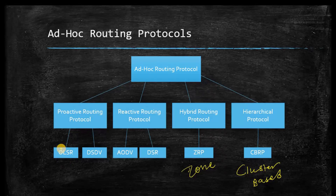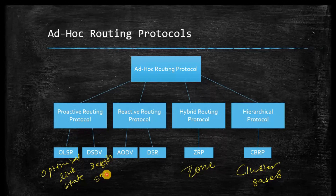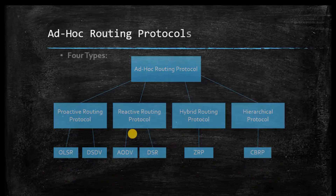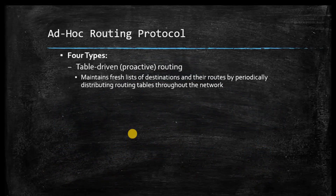To summarize the protocol full forms: OLSR stands for Optimized Link State Routing; DSDV stands for Destination Sequence Distance Vector, which we will study in detail in the next lecture; DSR stands for Dynamic Source Routing; and AODV stands for Ad-hoc On-demand Distance Vector Routing. These are the four major categories: proactive, reactive, hybrid, and hierarchical.